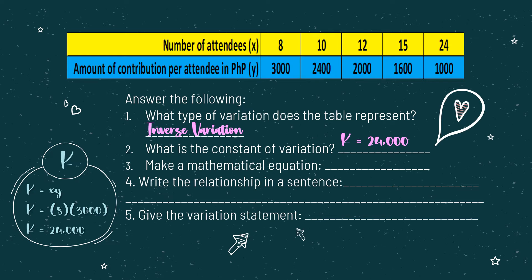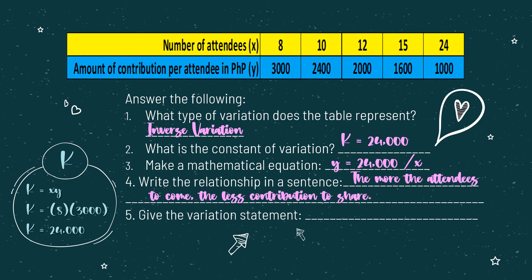Now, in making a mathematical equation — since this is an inverse variation — if we are going to translate it into a mathematical equation, Y varies inversely as X. So Y is equal to 24,000 (which is the value of the constant of variation) divided by the value of X. The mathematical equation that represents the table of values is Y equals 24,000 over X. The relationship: the more attendees, the less contribution to share. And the variation statement is: Y varies inversely as X.